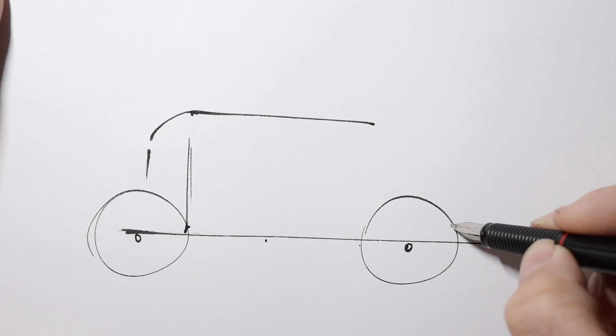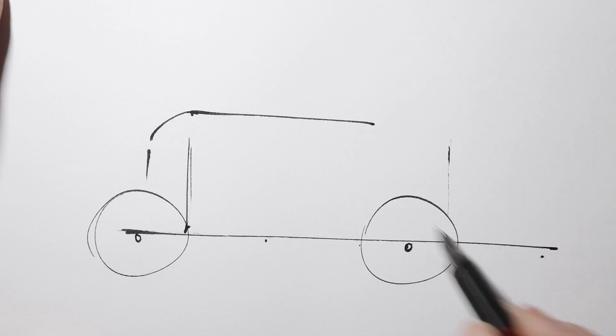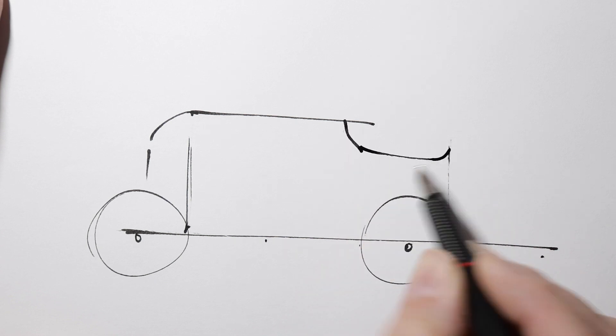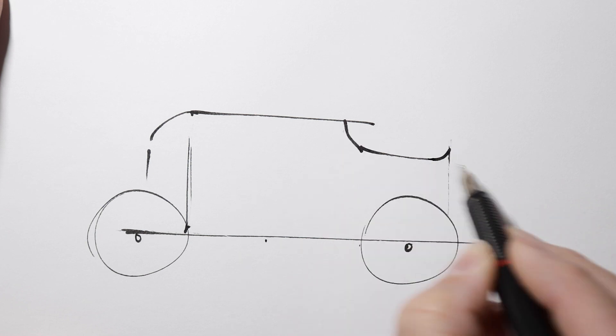We need another vertical line just in front of the back edge of the back wheel there. And the part where the driver sits needs to be carved out here. And notice how the back edge is slightly lower than the front edge.